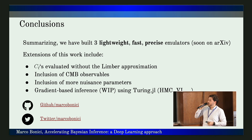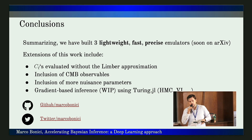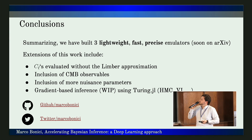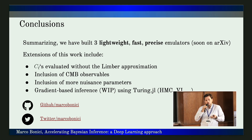Extensions of this work include evaluating the C_ℓs without the Limber approximation. We know that when we drop the Limber approximation the integrals are more expensive, but if we train the neural network with C_ℓs without this approximation, the neural network will learn this feature virtually for free. We also want to include other observables and more nuisance parameters.